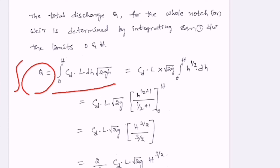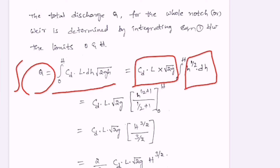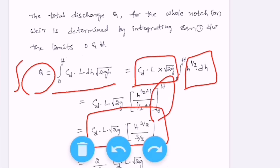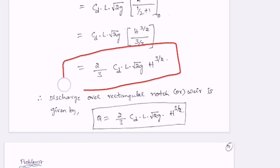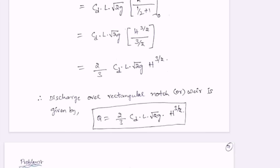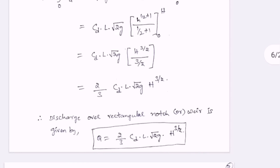Q is the integral of dQ. Removing the constants CD, L, and root 2g outside the integration, we get the integral of H to the power 1/2 dH. Integrating H power 1/2 gives H power 3/2 divided by 3/2, evaluated within the limits 0 to H. This simplifies to CD L root 2g into H power 3/2 divided by 3/2. Simplifying further, the final discharge over the rectangular notch or weir is Q equal to 2/3 CD L root 2g H power 3/2.